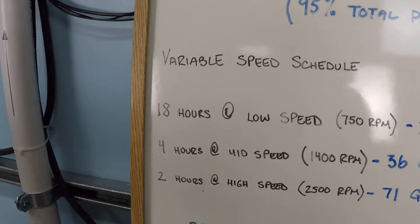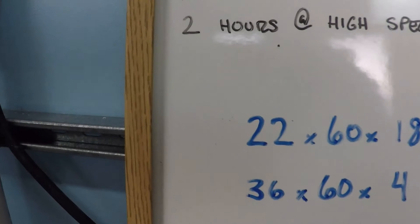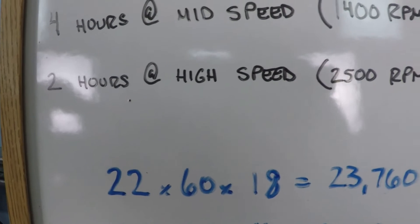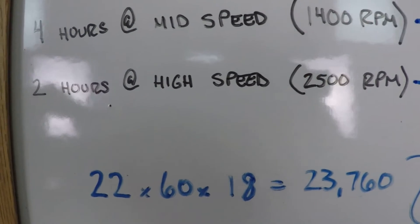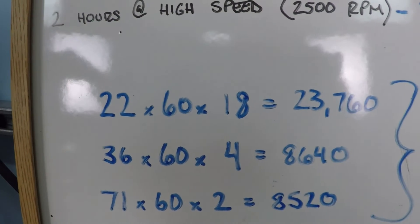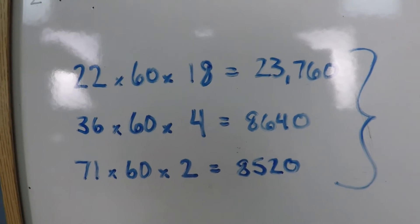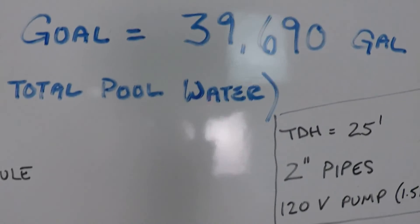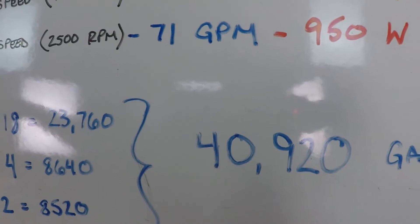So let's talk about these numbers just a little bit. So first of all, the flow: 22 gallons per minute times 60 minutes in an hour times 18 hours a day for the low speed operation, 23,760 gallons just from the low speed operation. 36 gallons per minute times 60 minutes times 4 hours, 8,640. And 71 gallons a minute times 60 minutes times 2 hours is just over 8,500. So the grand total here is 40,920 gallons. Our goal was 39,000. So we overshot by just a small amount and that's just fine. 40,920 gallons.